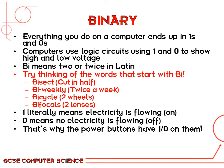This would mean that electricity is either flowing or not flowing through the circuit. 'Bi' actually means two or twice in Latin — that's where this word comes from. You'll start recognizing other words with 'bi' at the start too, like bisect meaning to cut in half, bi-weekly for twice a week, bicycle because there's two wheels, and bifocals because there's two parts to the lens of the glasses.